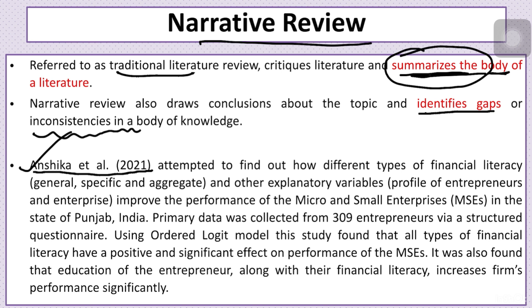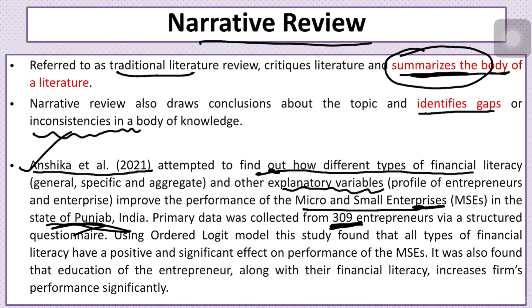Here is one of my papers as an example of how to write a narrative review. First, we write the objective of the study. Then we discuss the variables used in the research. Next, we look at the sample — the geographical area and number of samples taken — and the type of tool used to collect and analyze the data.